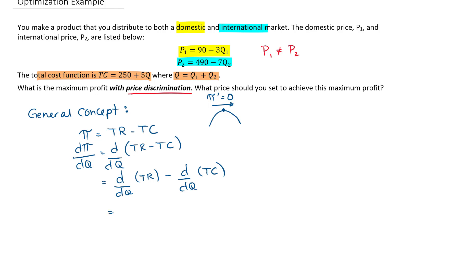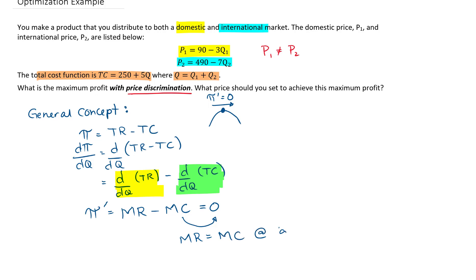Using the sum/difference rule, this is the same as d/dQ of TR minus d/dQ of TC. The derivative of TR is marginal revenue, and the derivative of TC is marginal cost. So the derivative of profit is really the difference between marginal revenue and marginal cost. At a maximum the slope equals zero, so setting that equal to zero gives us MR equals MC at a critical point for profit.